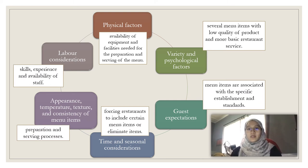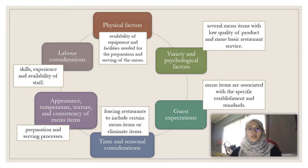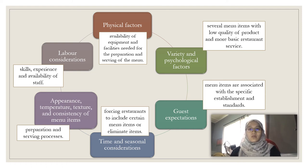Next, I and Ruiza will be presenting the next topic: Factors that Affect Menu Composition. Firstly, physical factors — a variety of equipment and facilities needed for the preparation and serving of the menu. Variety and psychological factors — several menu items with low quality of product and more basic restaurant service. Guest expectation — menu items are associated with the specific establishment and standards. Time and seasonal considerations — this forces restaurants to include certain menu items or even eliminate any items. Appearance, temperature, texture, and consistency of menu items — this includes the preparation and serving processes. Labor consideration — this includes the experience and availability of the staff.